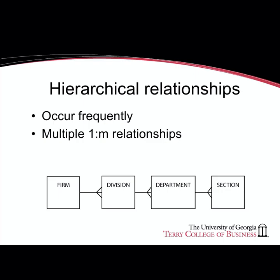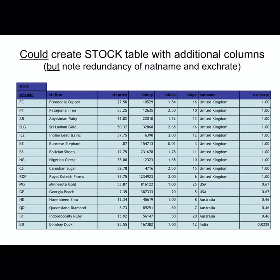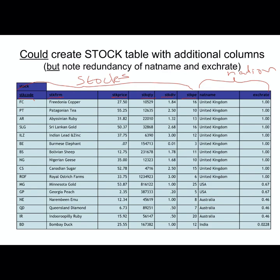While we could try to put all of this data in a single entity or single table, there are problems created when we attempt to do that. In the example of stock and nation, we could have a stock table with attributes: stock code, stock firm, stock price, stock quantity, stock dividend, and stock price-to-earnings ratio. Nation attributes would include nation name and exchange rate. It is possible to have both stock and nation attributes in one table, but this creates problems.